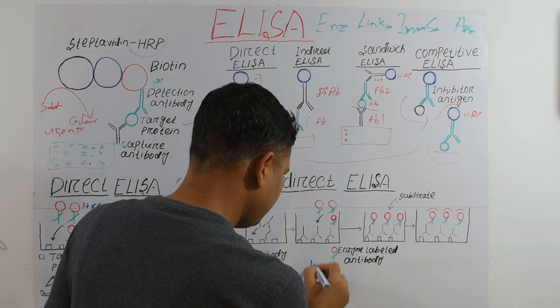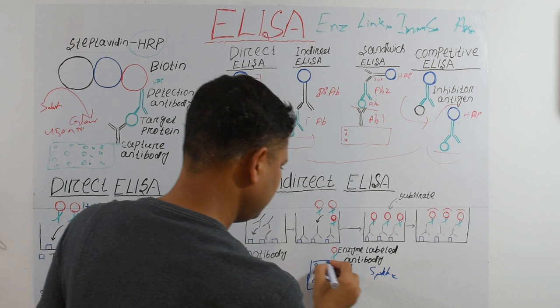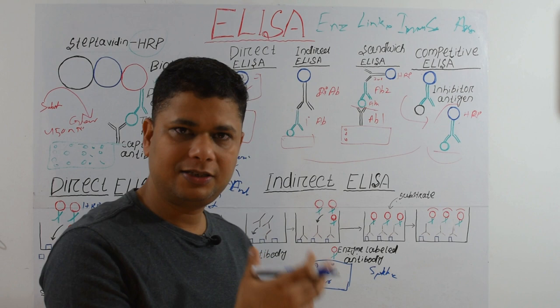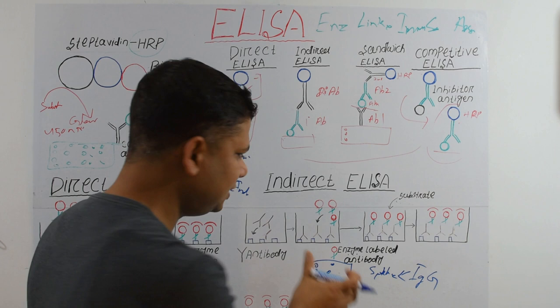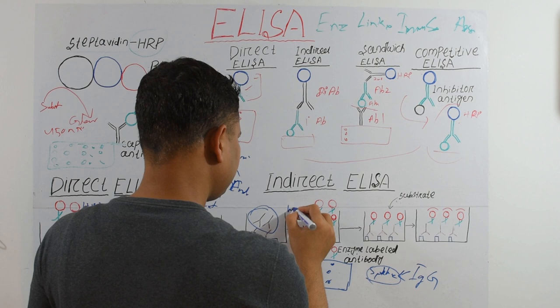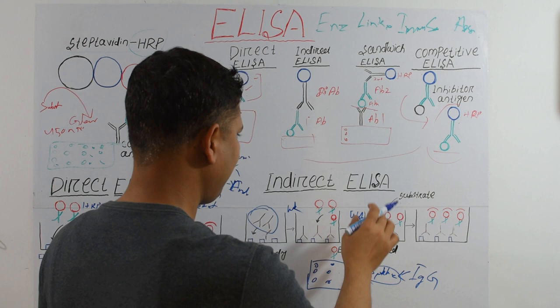Spike protein is the antigen in this case. In the multiwell plate, we put spike protein and fix it. Then we add different serum samples collected from different humans and check whether the IgG corresponding to this spike protein is present. After incubation, we wash it, then put secondary antibody conjugated with HRP, wash again, and add substrate to produce the glow.